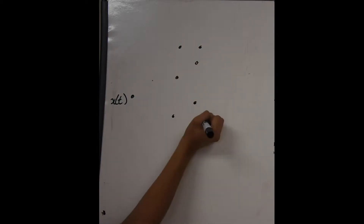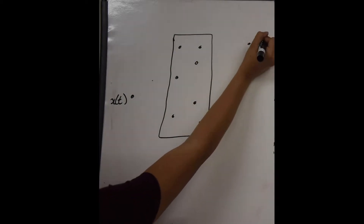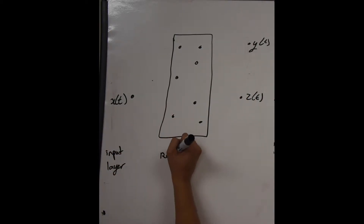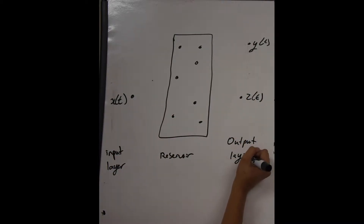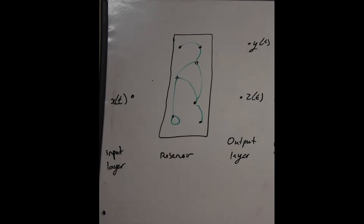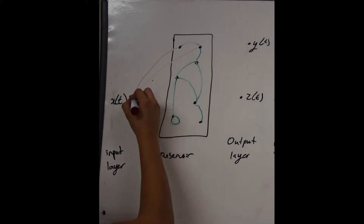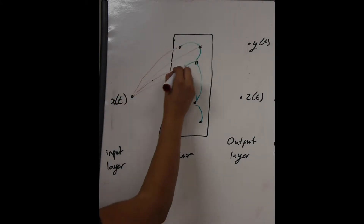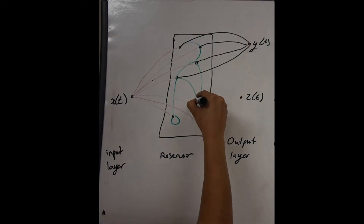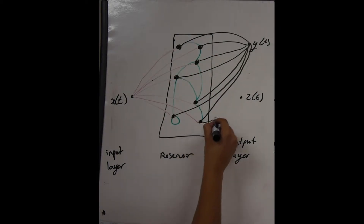One part we might want to determine is unknown inputs. This is called the observation task. On a theoretical level, reservoir computers are made of an input layer, a reservoir layer, and an output layer. If a chaotic system is made of, say, three variables — x, y, and z — the observer task allows us to feed in only one variable, say x, and get out the other two by twisting and turning those mathematical knobs until it gets it just right, then outputting y and z.